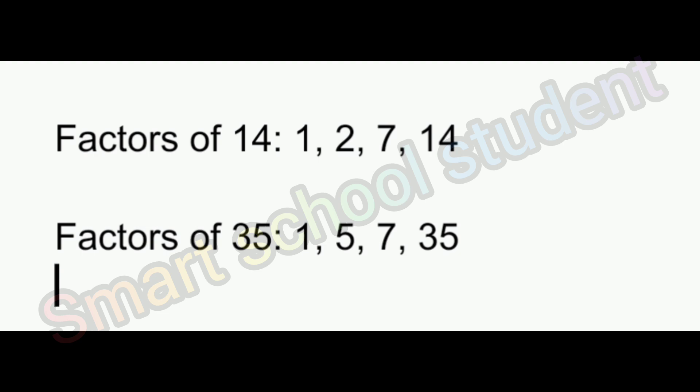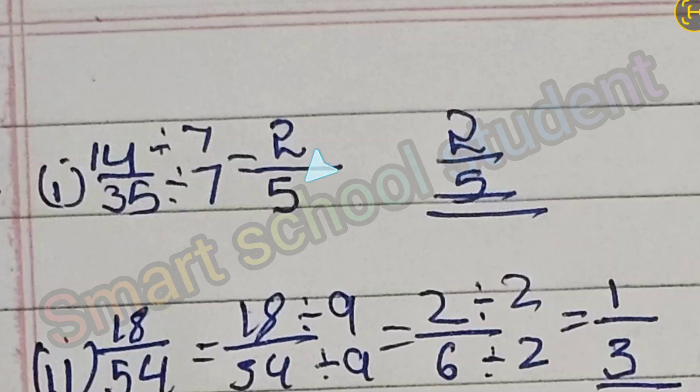We have 14 factors: 1, 2, 7, 14. Factors of 35 are 1, 5, 7, 35. So the GCD is 7. Divide both numerator and denominator by 7, so we get 2 divided by 5. That is the answer.